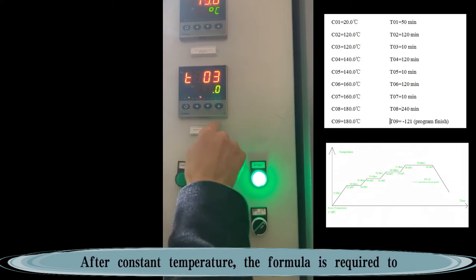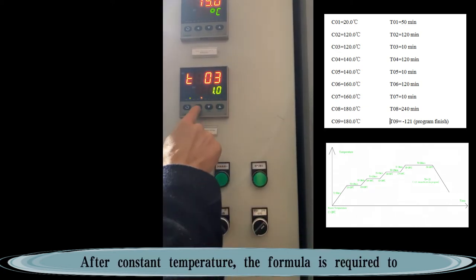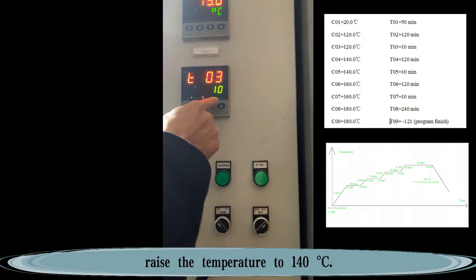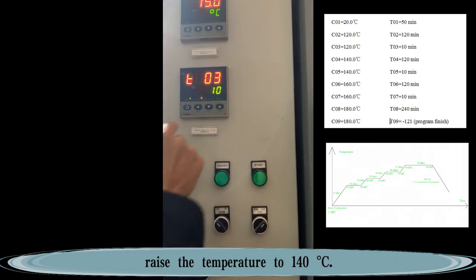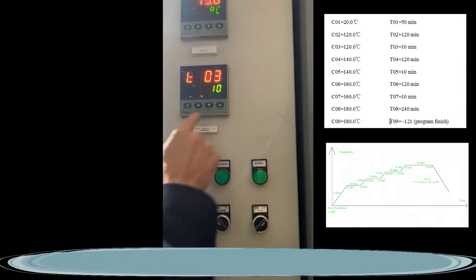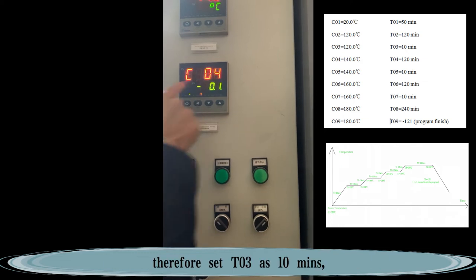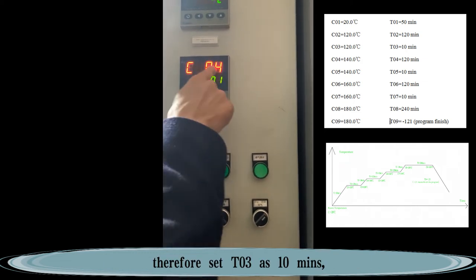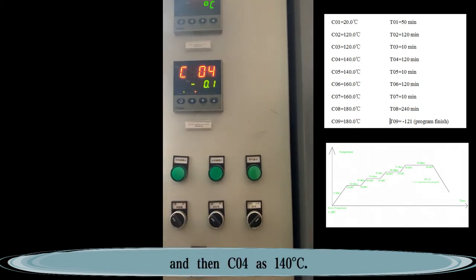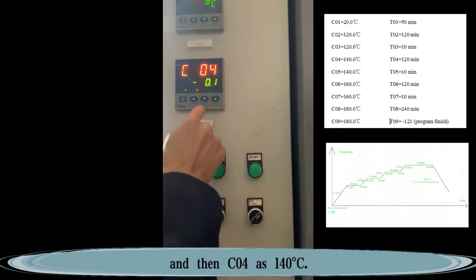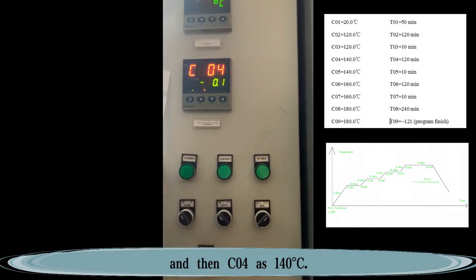After constant temperature, the formula is required to raise the temperature to 140 degrees Celsius. At this time, it takes 10 minutes to raise the temperature. Therefore, set TO3 as 10 minutes and then CO4 as 140 degrees Celsius.